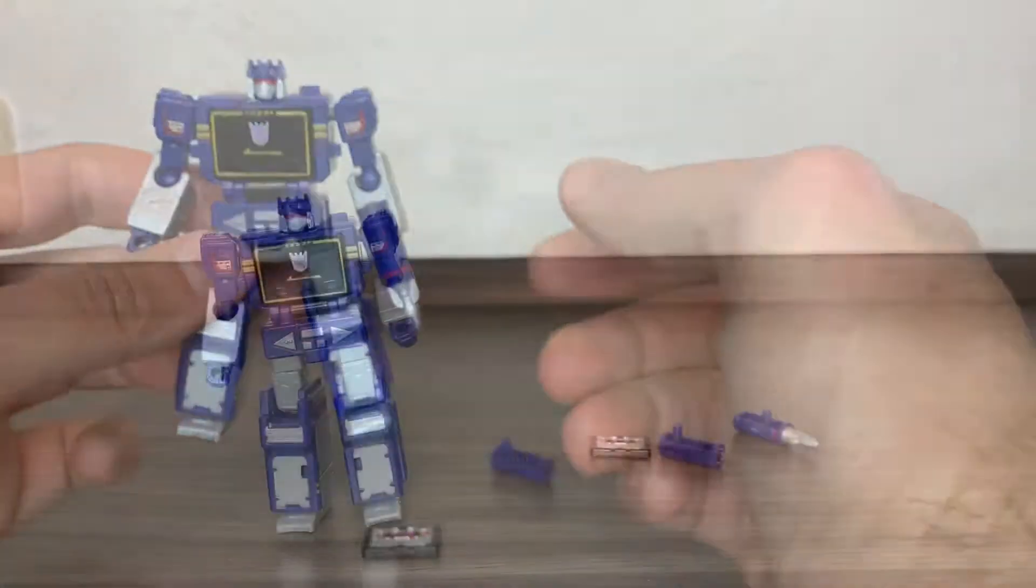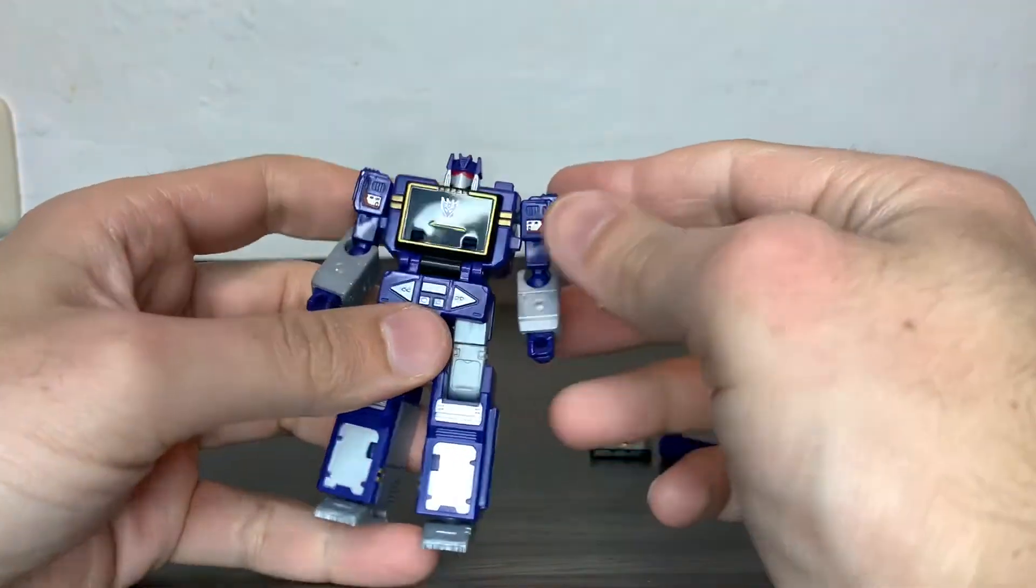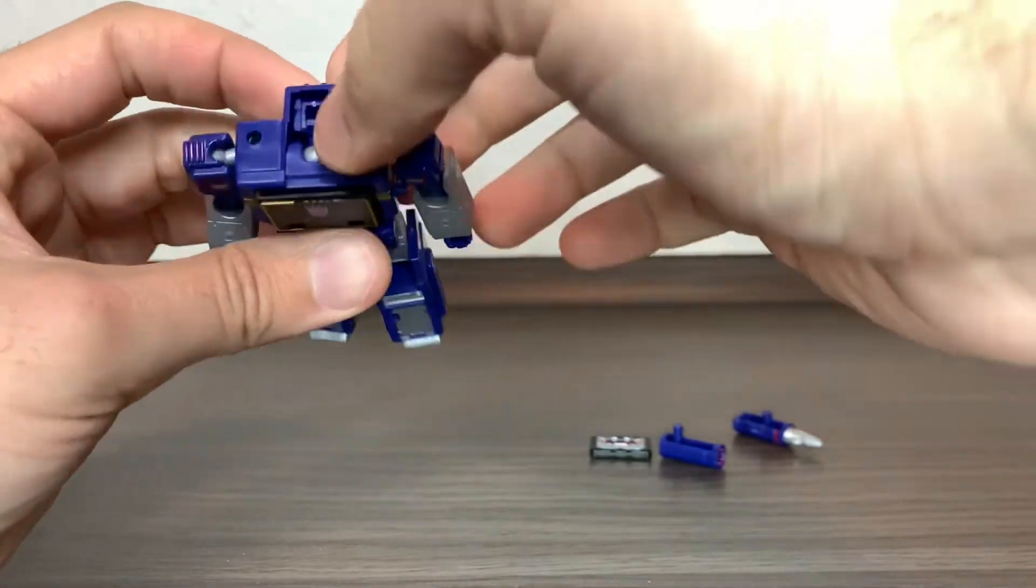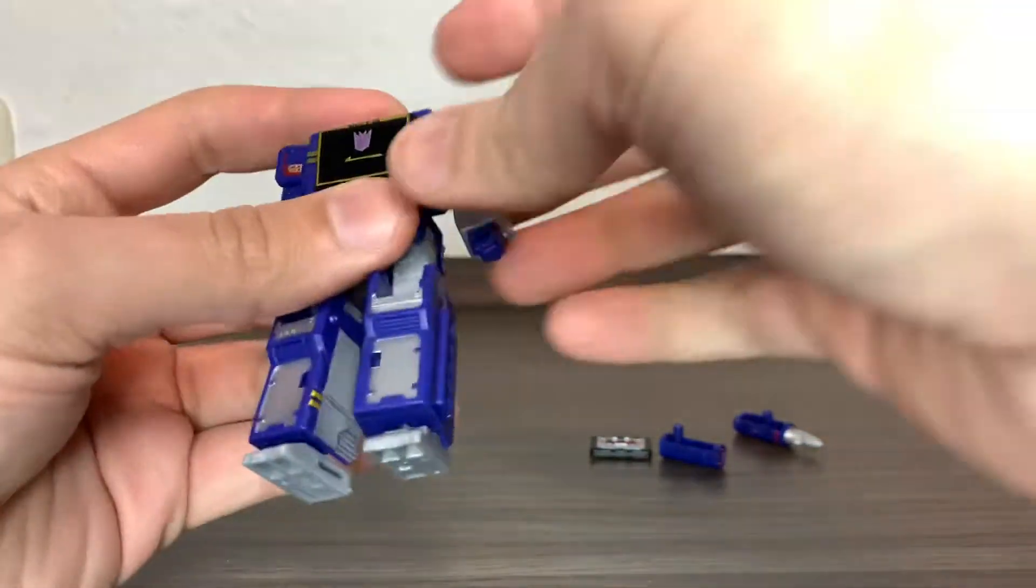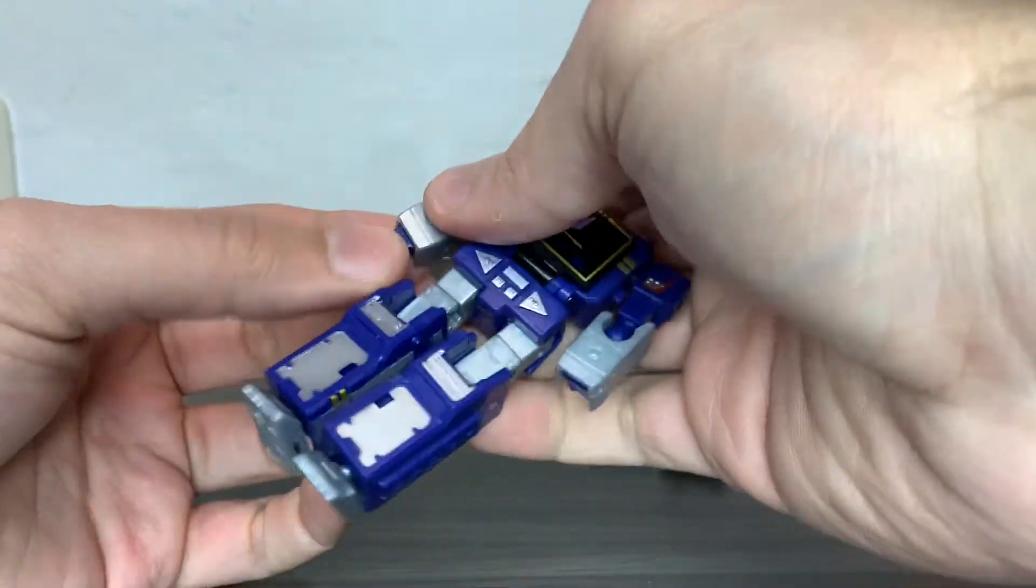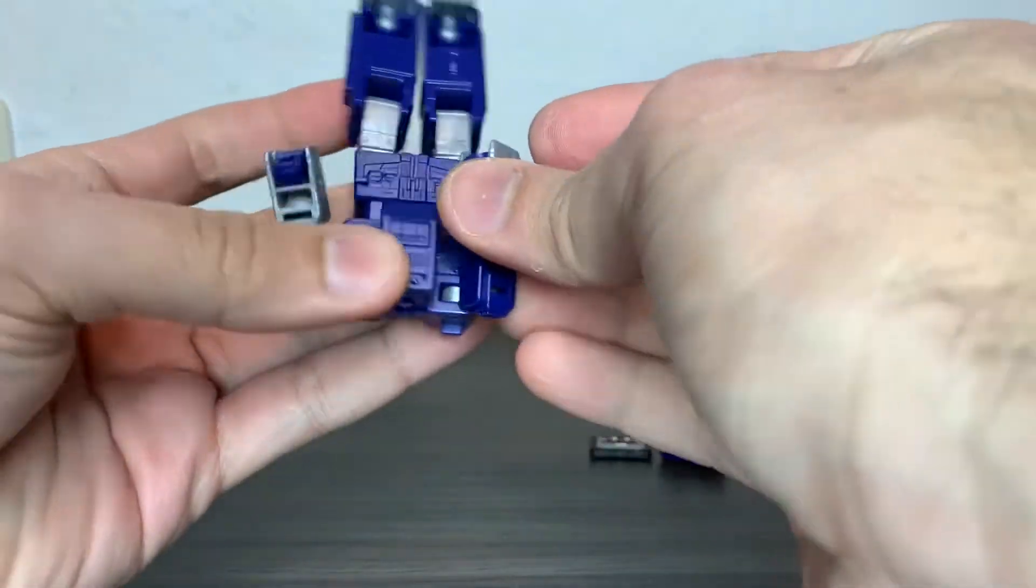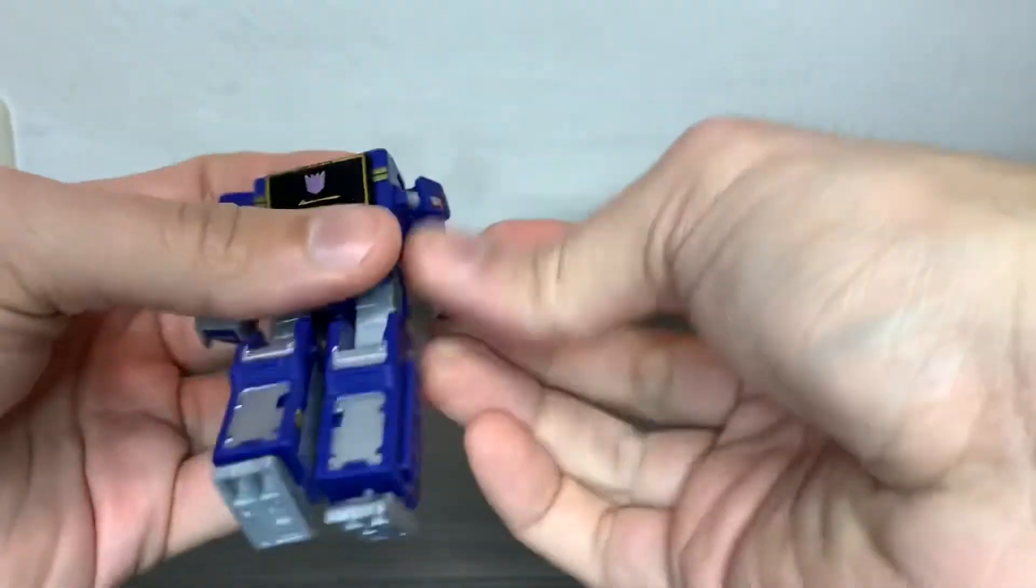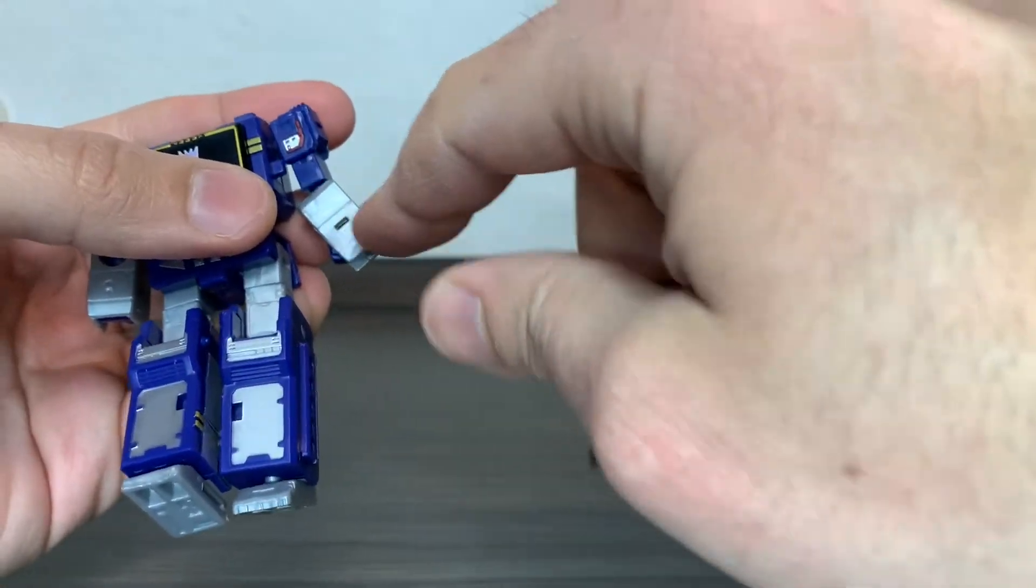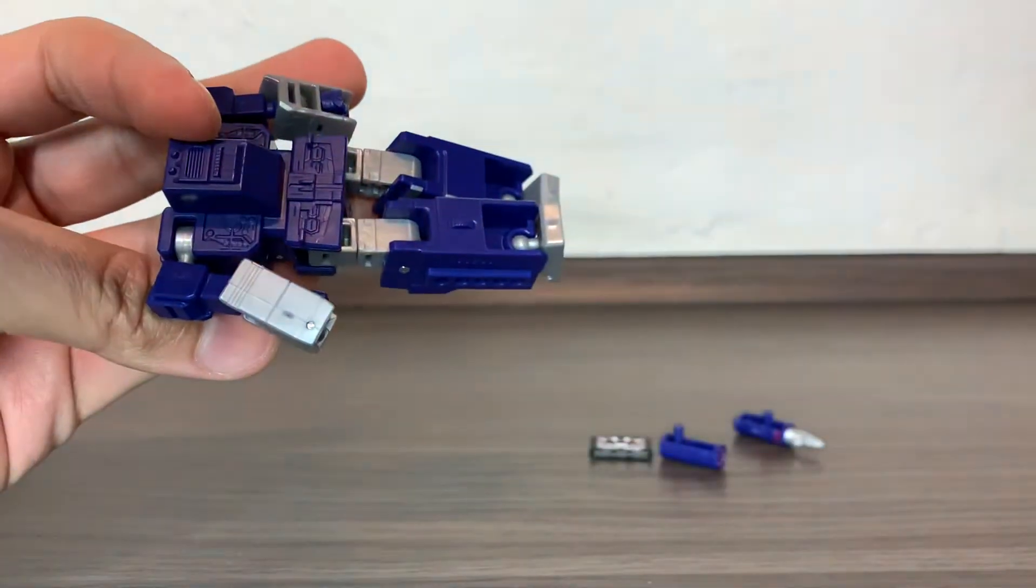Now the transformation is pretty straightforward. You turn the head around and bring it down in that compartment. Then you bring the hands to the back. You turn the arms—first you have to see he has a little tab hole here and there's some tabs here in the back of his back skirt.